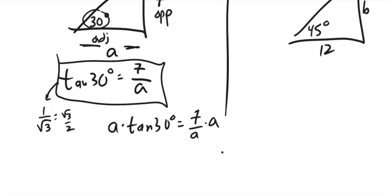So if I want to solve this for 7, I could multiply both sides by a. I'm trying to solve for a, but trying to get a all alone. So let me do this: I've got a times tangent of 30 degrees equals 7.